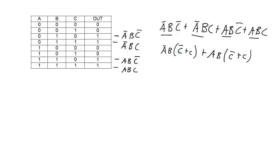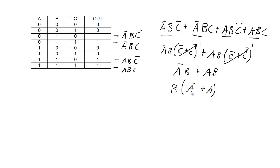That term NOT C OR C is equal to 1 — anything ORed with its complement is 1. So I have NOT A, B OR A, B. I can factor the B out of this now. I'm left with NOT A OR A, which is equal to 1. So overall, this is simply equal to B. Not super challenging, but you need to know how to do Boolean algebra simplification in order to figure out that this truth table can be implemented with simply B.